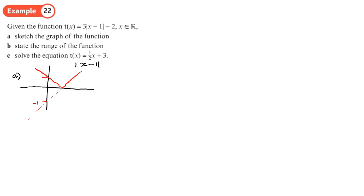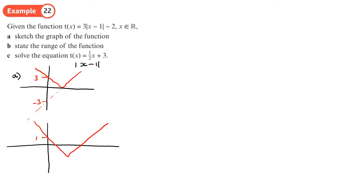All of that gets stretched in the y-direction by 3 because it's 3 times that, so we change those to 3. We're not interested in the reflection anymore, and then the whole thing gets moved down by 2. If we move it down by 2, it's now going to cross at 1 up on the axis.